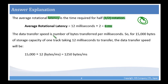The data transfer speed is the number of bytes transferred per millisecond. So for 15,000 bytes of storage capacity of one track taking 12 milliseconds to transfer, the data transfer speed will be 15,000 divided by 12 bytes per millisecond, which equals 1250 bytes per millisecond.